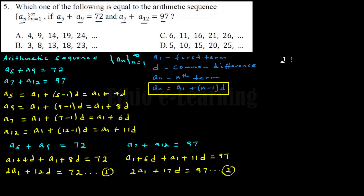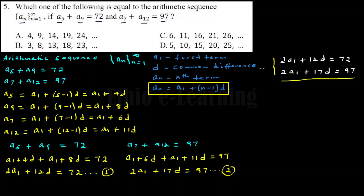We have the system: 2A sub 1 plus 12D equals 72, and 2A sub 1 plus 17D equals 97. Since the coefficient of A sub 1 is the same in both equations, we can use elimination. Subtracting equation 1 from equation 2: 2A sub 1 minus 2A sub 1 gives zero, and 12D minus 17D gives minus 5D equals minus 25, so D equals 5.